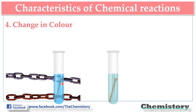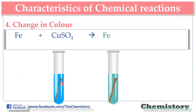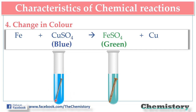Now let's take another example. We can say that if we drop an iron nail into a CuSO4 solution, we will observe that the blue solution of CuSO4 slowly starts turning greenish, due to formation of FeSO4.